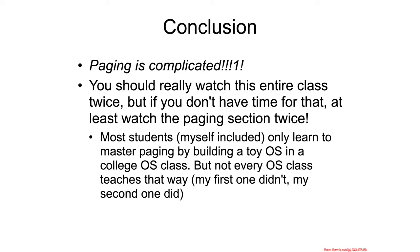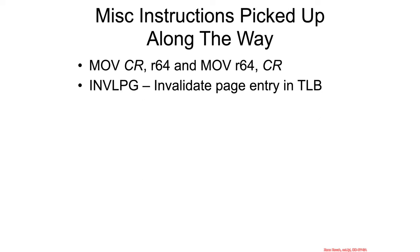So if you don't have time for taking a full operating systems class, then you should at least try to take this class twice. Other than that, we mostly just looked at a ton of tables and a ton of entries in those tables in this section. There's not a lot of new assembly instructions — just the new move register 64-bit into control registers or out of control registers, and the invalidate page assembly instruction for forcing out global pages from the TLB.